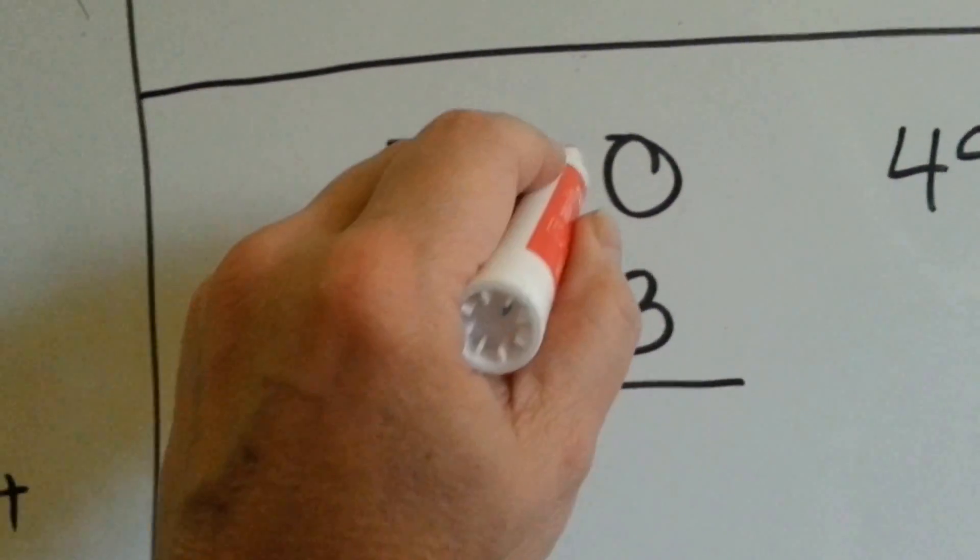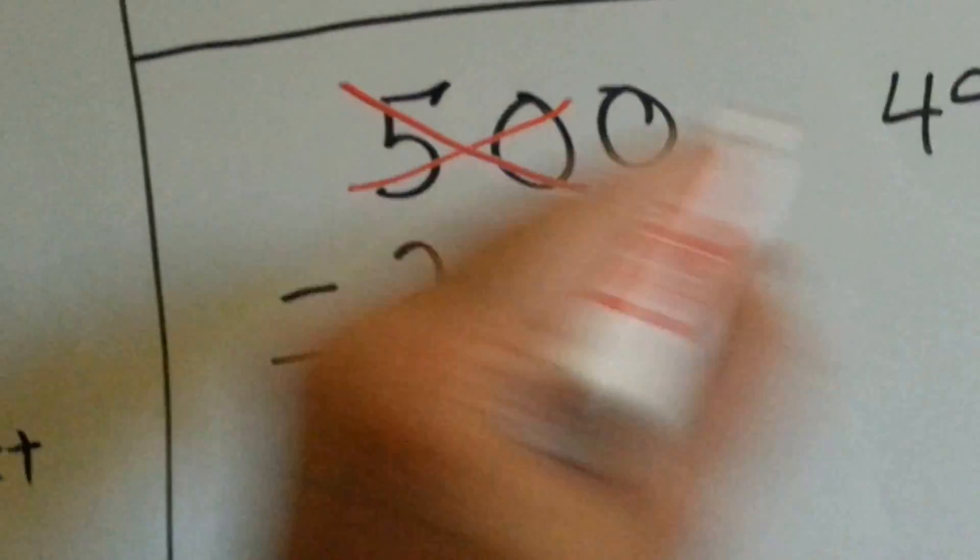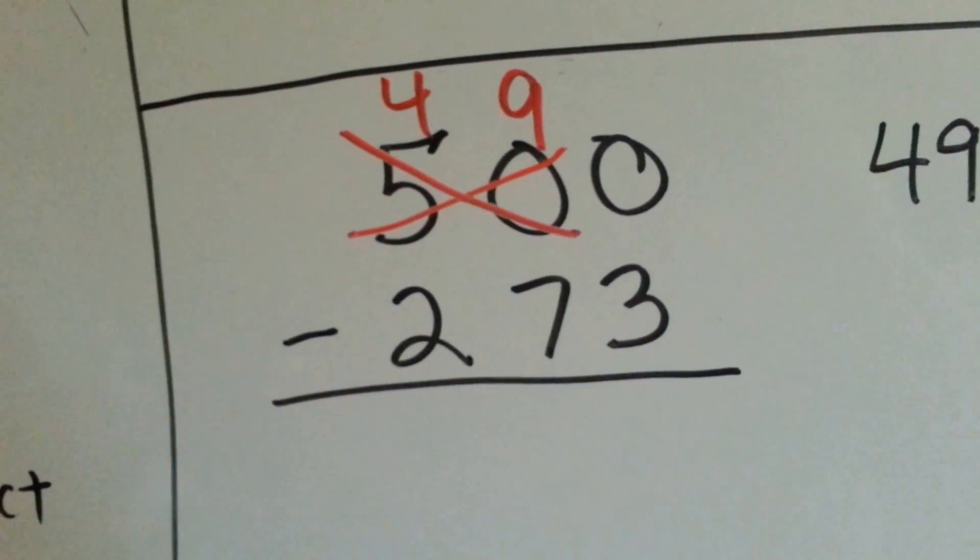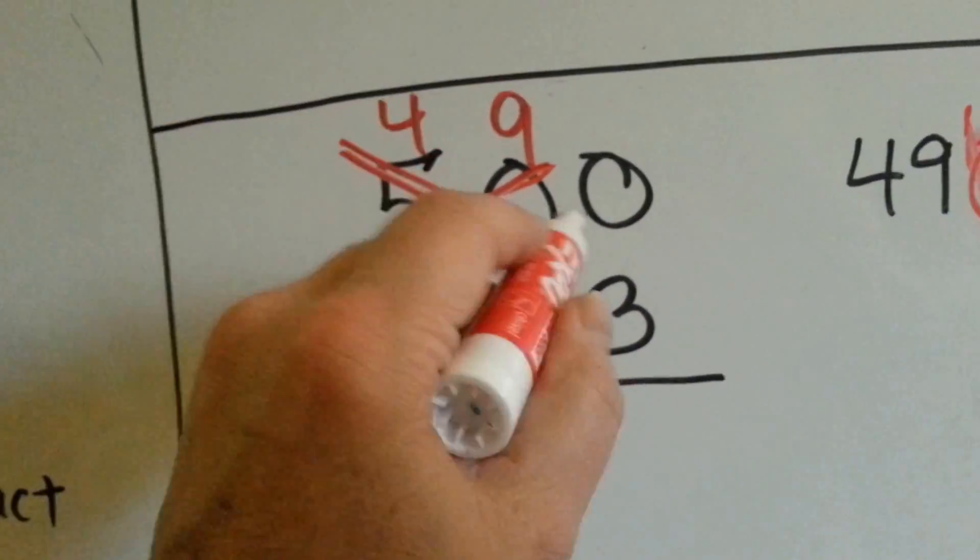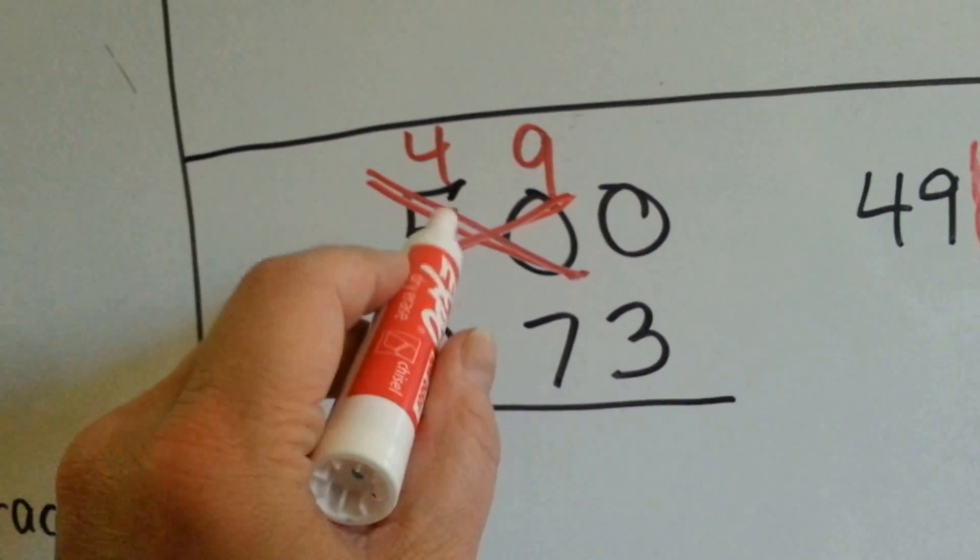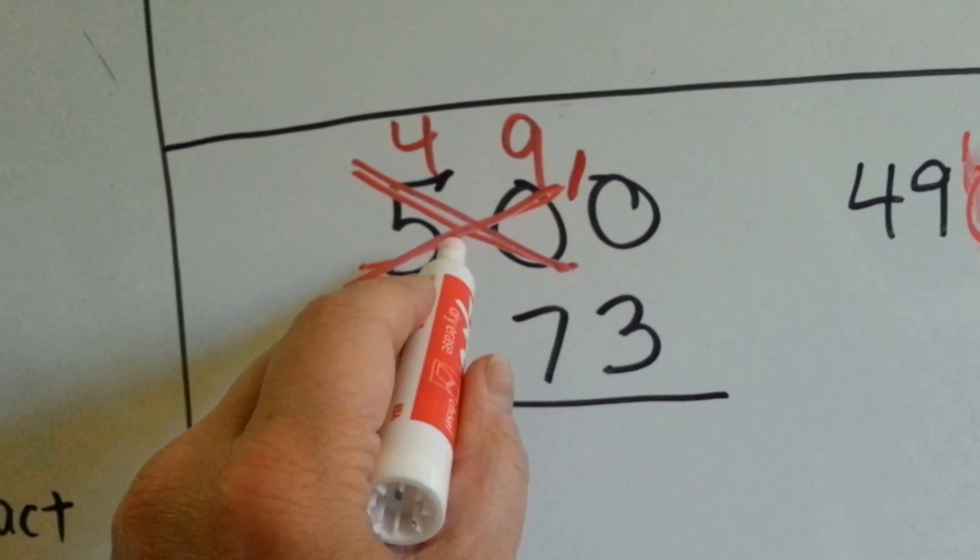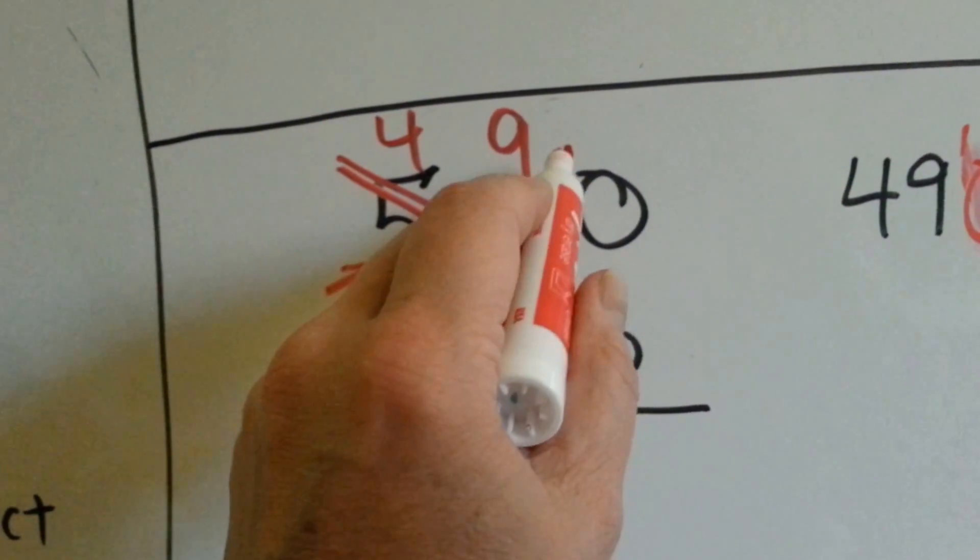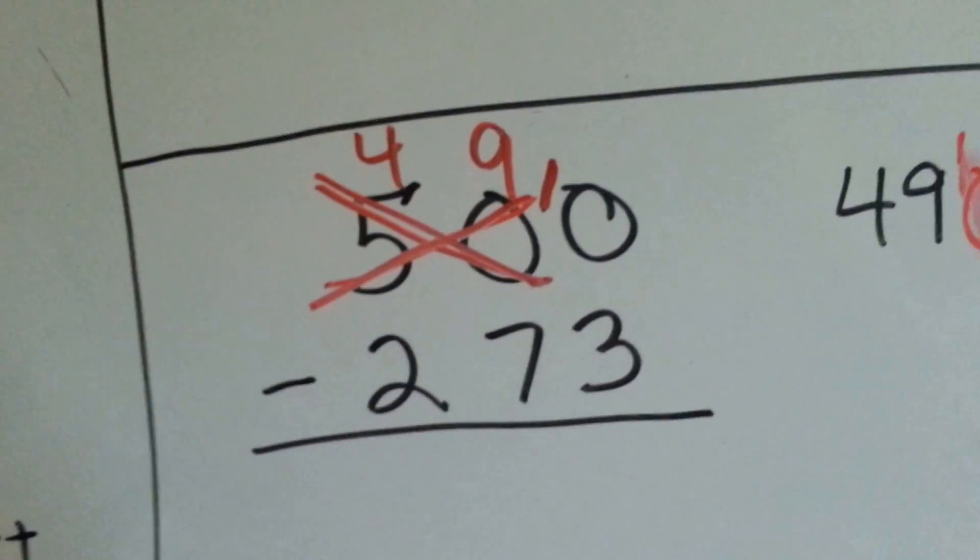is to cross off the 50 and make it the next smallest number, 49. See? We crossed off the entire 50, not just the 0. And the next smallest number from 50 would be 49. That way, when the 0 borrows 1, it borrowed it from the 50, not from just the 0 or the 5. It borrowed 1 from the 50, so the 50 became a 49.